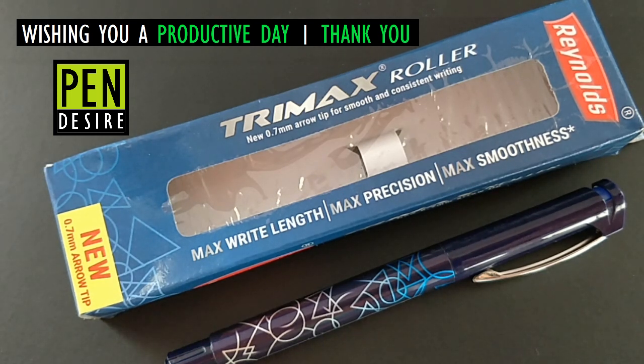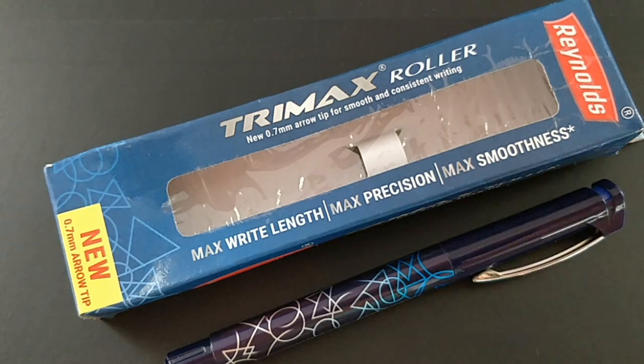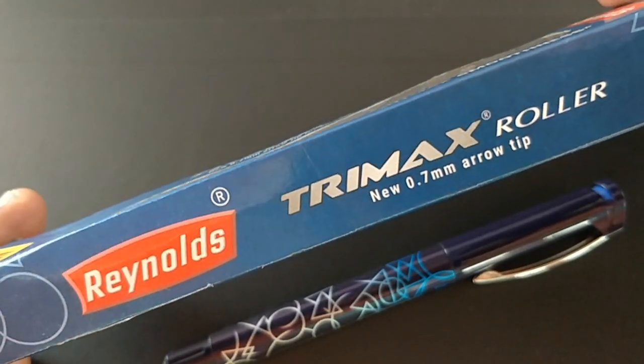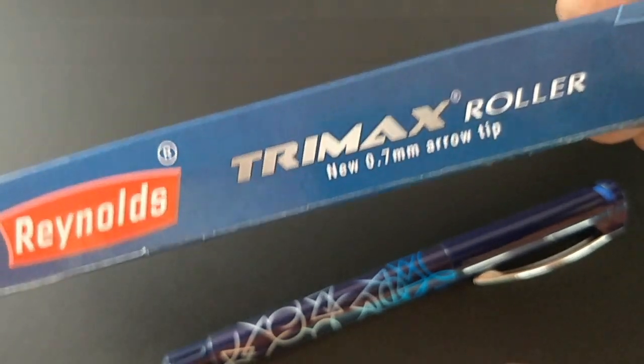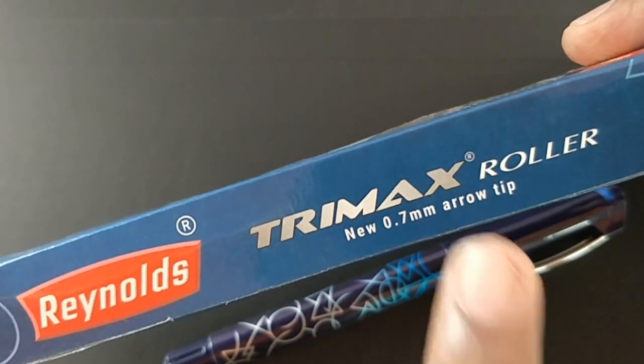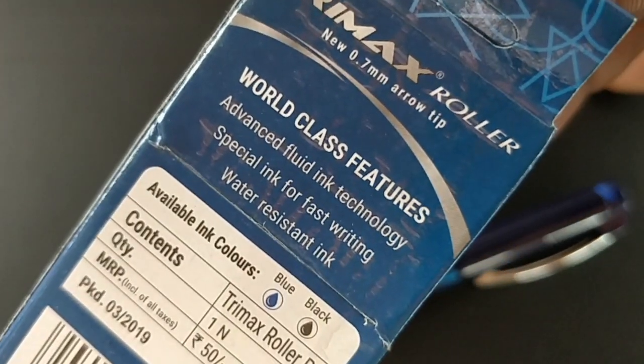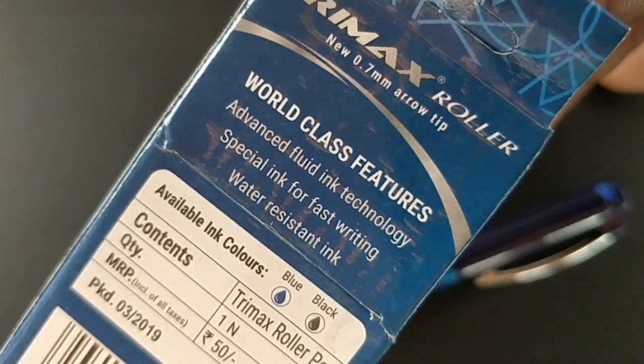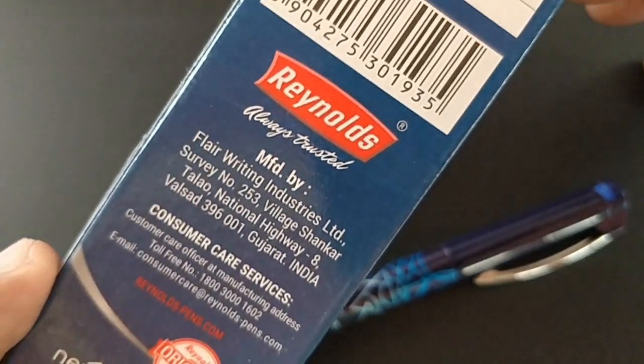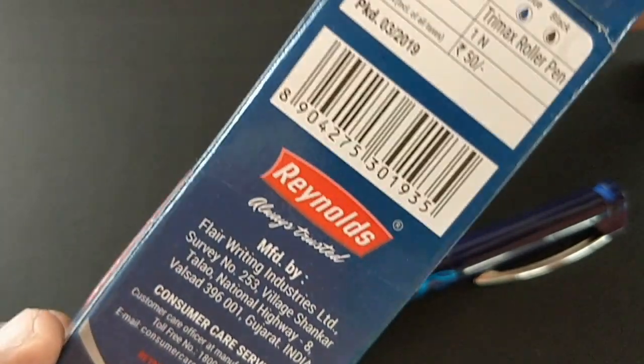Pen Desire welcomes you. Let's take a look at Trimax Roller from Reynolds. This is a 0.7 tip liquid ink roller pen that comes with an arrow tip, says the pack.